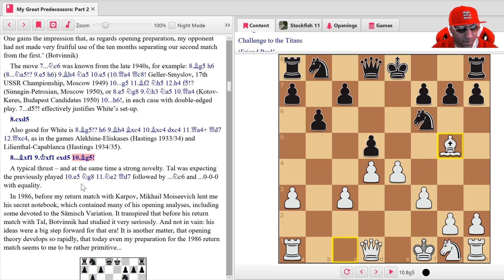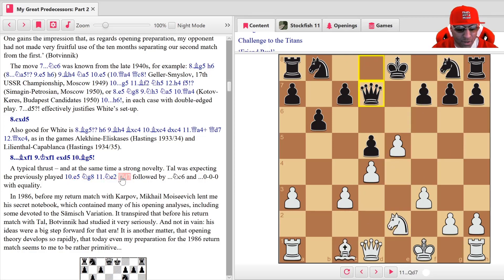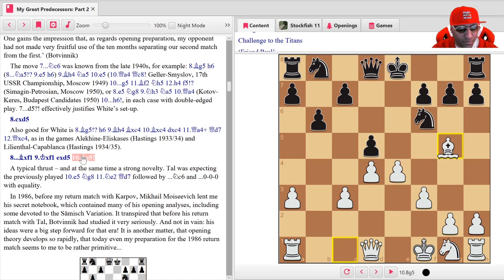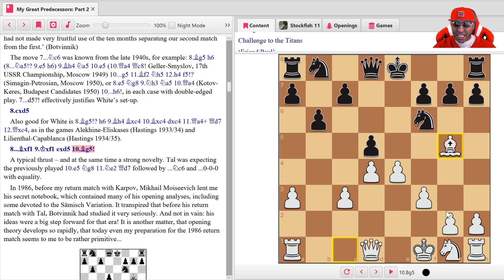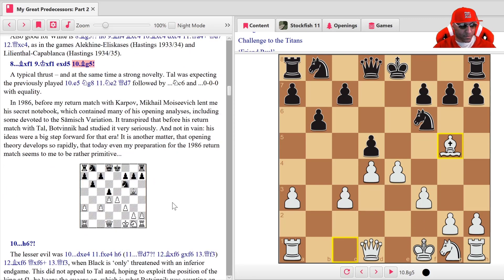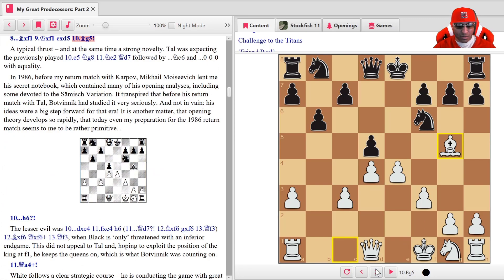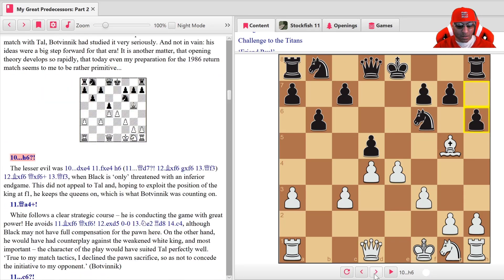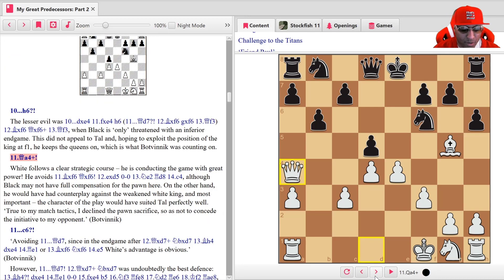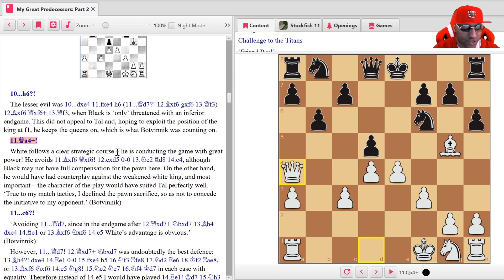This is a typical thrust and at the same time a strong novelty. Tal was expecting previously played e5, knight g8, knight e2, queen d7, followed by knight c6, castle queenside with equality. Somebody played bishop g5 here is actually what Botvinnik played. After bishop g5, we have b6. No, h6. The lesser evil was taken upon.